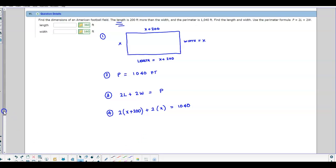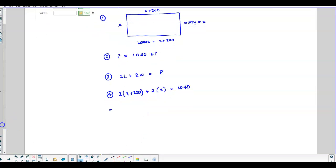So we're going to distribute the 2 to get 2x + 400 + 2 times x, which is 2x, which is equal to 1040. Combining like terms, we get 4x + 400, and that's equal to 1040.